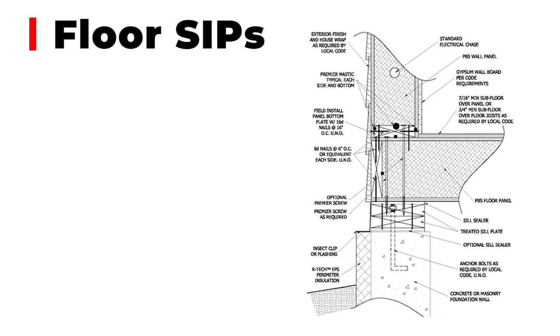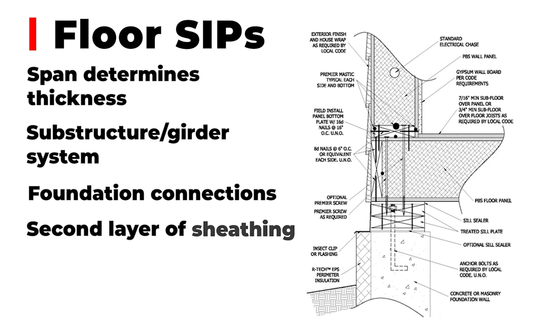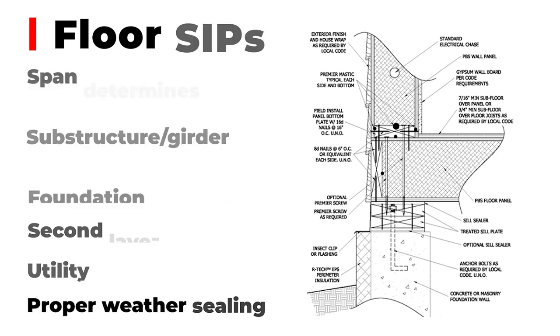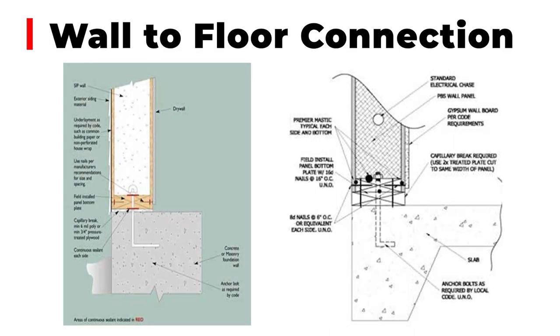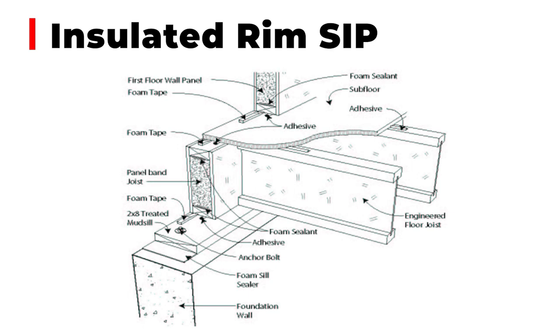Floor SIPs — we can use panels for floors, though we don't often. Once a floor panel is down, we simply put a plate and move up with the wall panel on top. For a concrete slab on grade, we just need to separate the wall panel from the concrete with a capillary break to prevent moisture movement. To improve thermal performance with a conventional floor system, we can use a rim SIP instead of a rim board, avoiding the problem of poorly installed insulation in floor cavities.